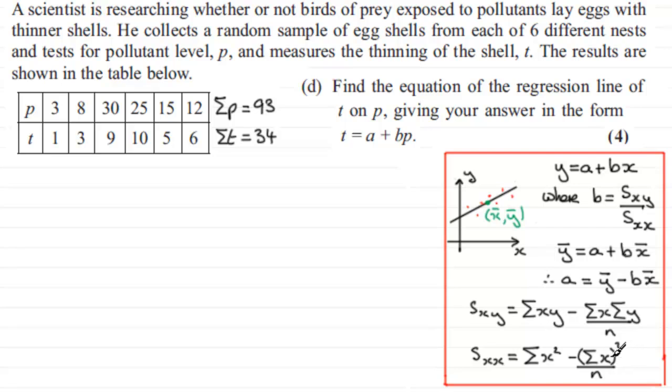So when it comes to working out the equation, the regression line of the form t equals a plus bp, all we're doing is taking this idea here, replacing any x with a p, and the y value with a t. So we start then with working out what b is. So to get b, b is going to be equal to, well we can take it from here, instead of sxy over sxx, it's now going to be spt over spp. So we'll just put that up here, spt over spp.